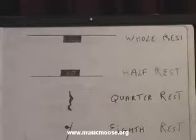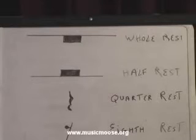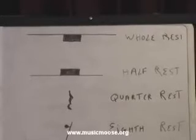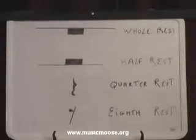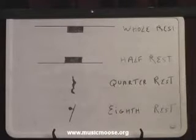The whole note, the half note, the quarter note, and the eighth note. You remember that the whole note in four-four time had four beats associated with it. The half note had two beats. The quarter note had one beat. And the eighth note had a half a beat associated with it.